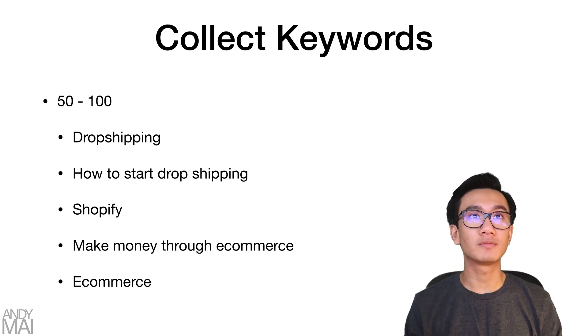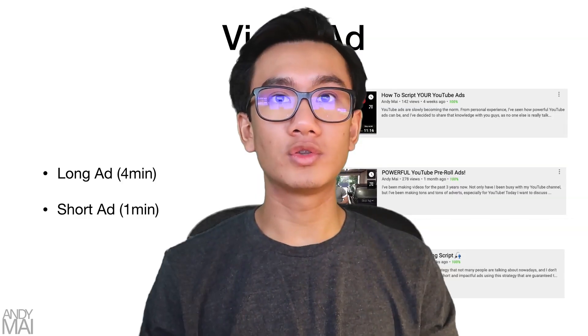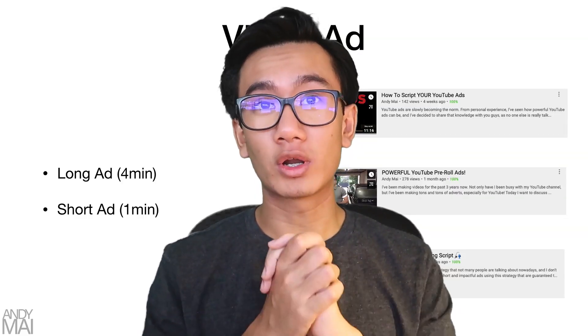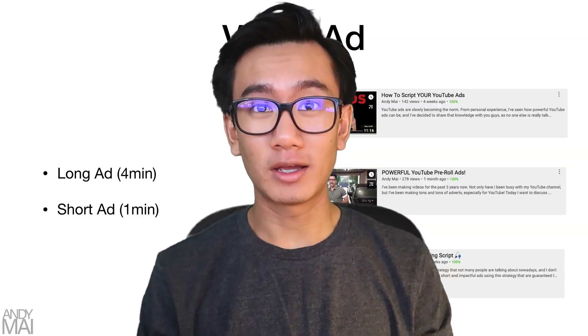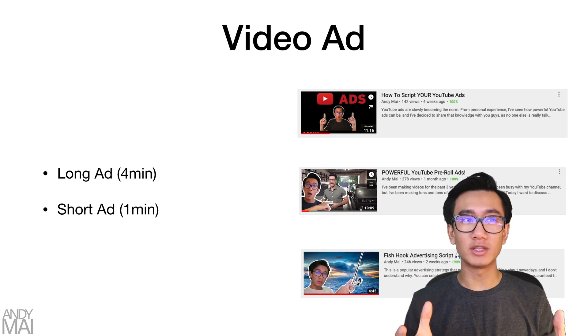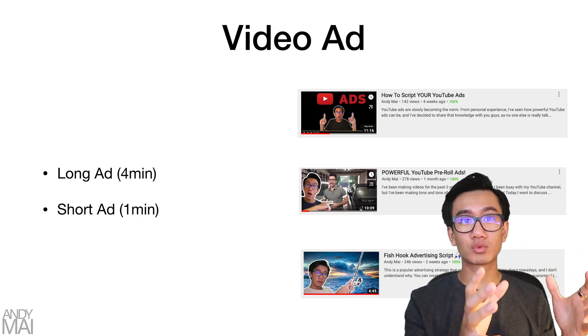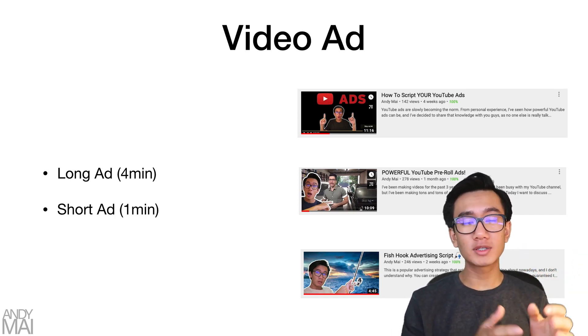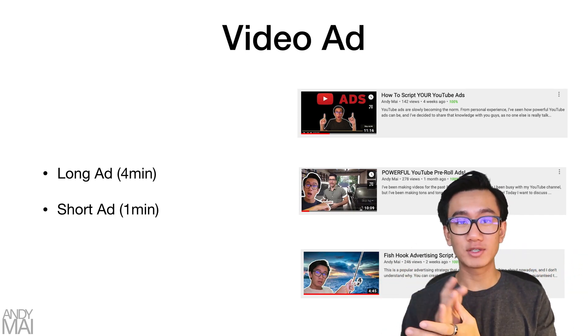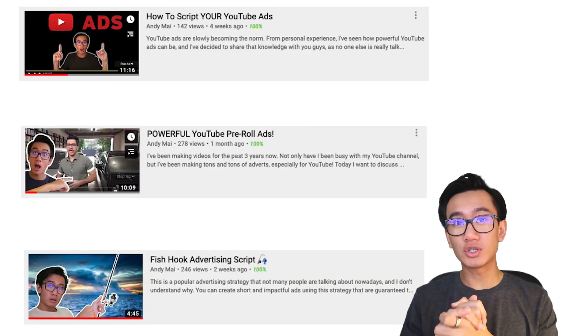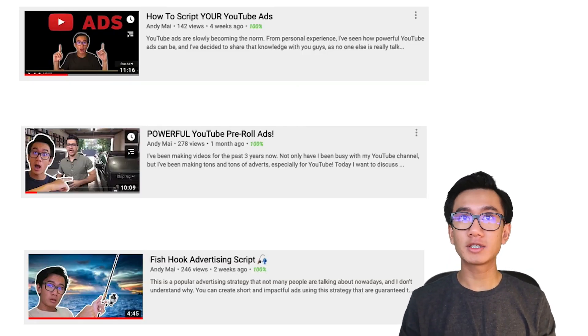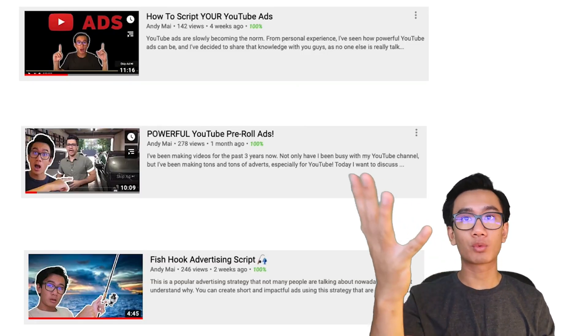After you've collected placements and keywords and have them all in a note, you want to create your ads. You'll have two different ads: a long ad — roughly around four minutes — and a short ad — roughly around one minute.